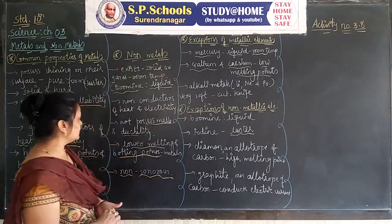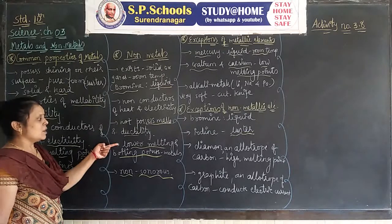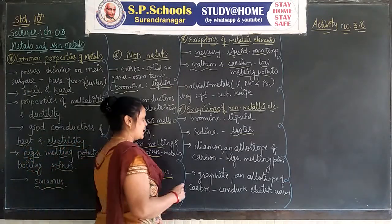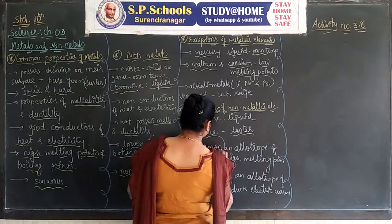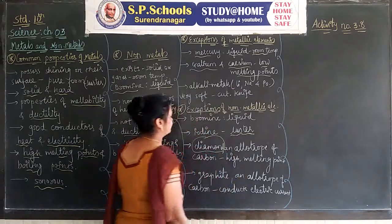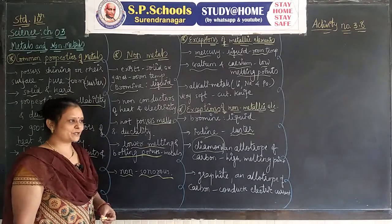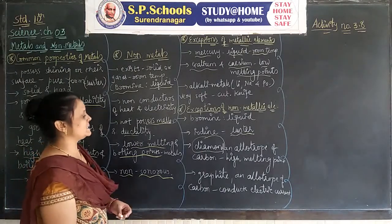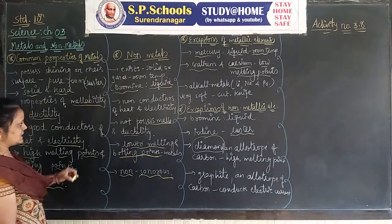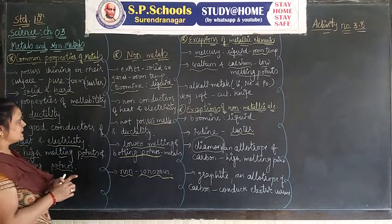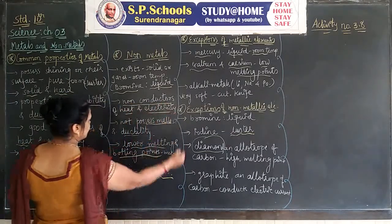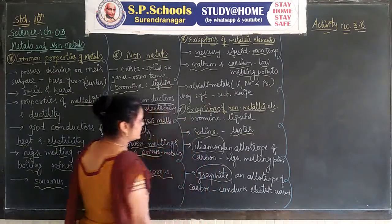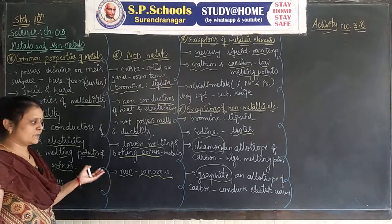Non-metallic elements generally show lower melting and boiling points, but diamond, an allotrope of carbon, shows a high melting point due to its long chain structure. Also, graphite, another allotrope of carbon, conducts electric current, unlike most non-metals which are non-conductors of heat and electricity.